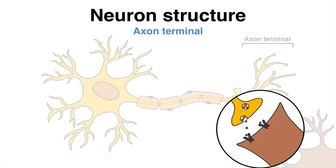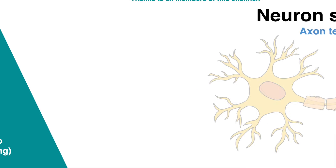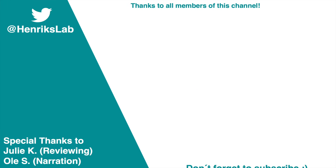Here neurotransmitters come into action. These chemical messengers, stored in vesicles, are released from the axon terminals and bind to receptors on the dendrites or cell body of the target cell, allowing for the transmission of signals between neurons. This summarizes the structure and function of a neuron.